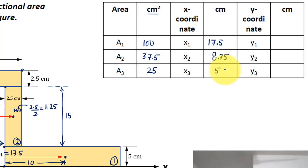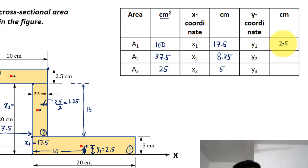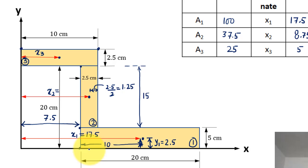So we've got the values of x coordinates. Now we're going to go ahead and calculate the value of y1, y2, y3. This over here is y1, which is going to be half of this 5. Half of 5 we know very well is 2.5.